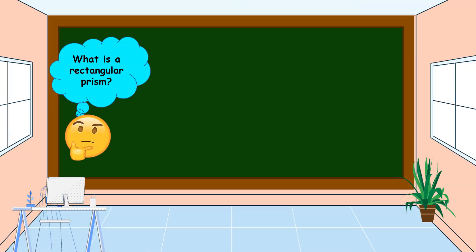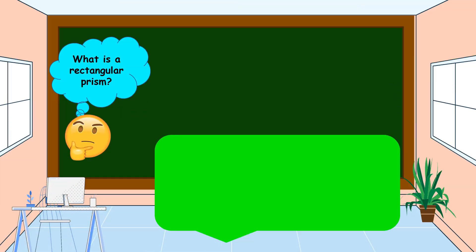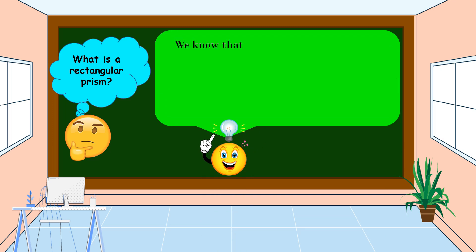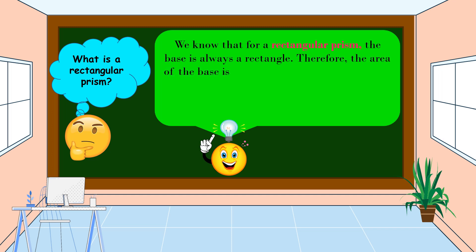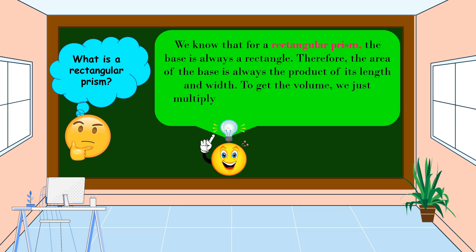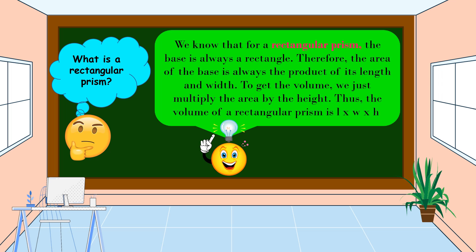What is a rectangular prism? For a rectangular prism, the base is always a rectangle. Therefore, the area of the base is always the product of its length and width. To get the volume, we just multiply the area by the height. Thus, the volume of a rectangular prism is length times width times height.